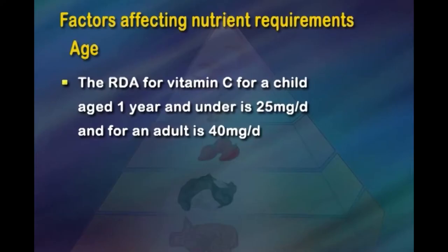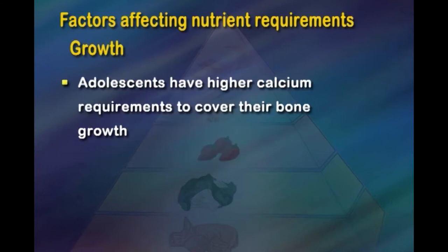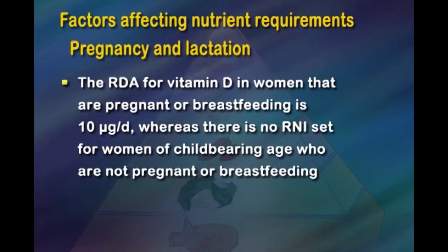Various factors affect RDA requirements. For example, the iron RDA for a child aged one year may range from 25 mg to 40 mg per day. The RDA for iron is 21 mg per day for women and 17 mg for men. Adults have higher calcium requirements to cover bone growth during growth spurts. Pregnancy and lactation demand more vitamin D — around 10 micrograms per day — whereas no such limit is set for women who are not pregnant or breastfeeding.